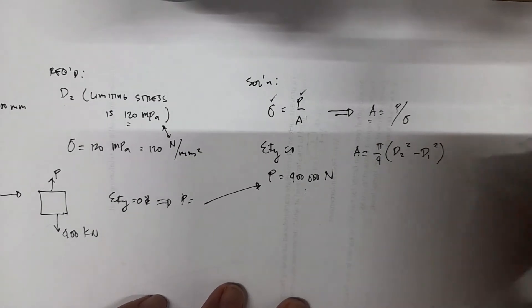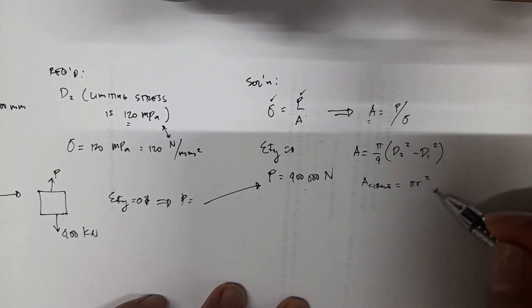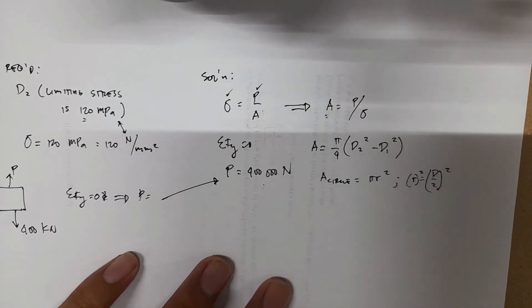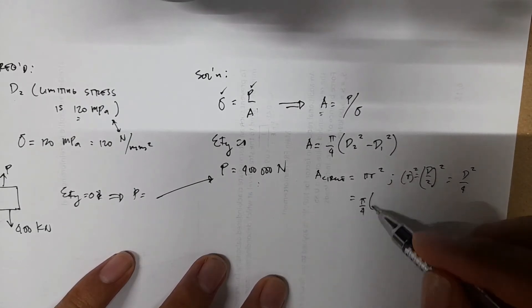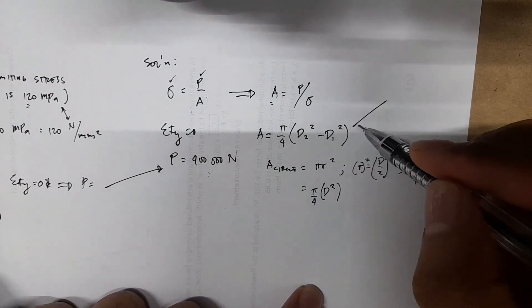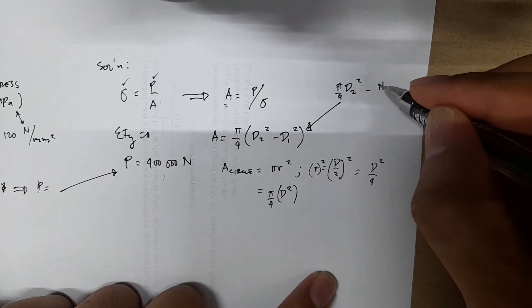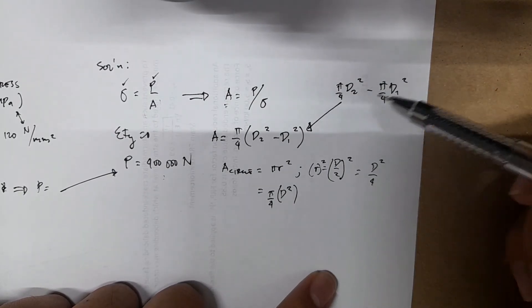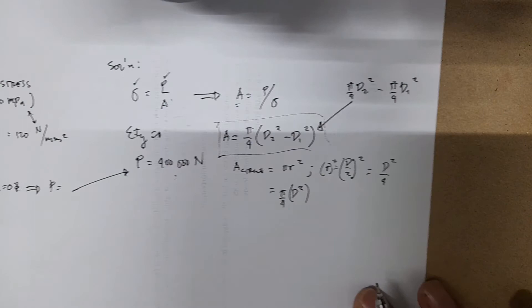Actually, this comes from the area of a circle, which is pi over 4 D squared. This formula comes from your area outside, pi over 4 D2 squared, minus pi over 4 D1 squared. Since you have a common term here, pi over 4, you just have to take it outside, that's why you only have this equation for your area.